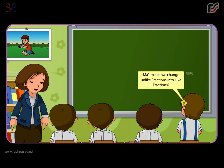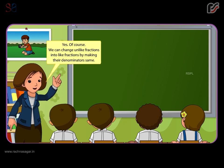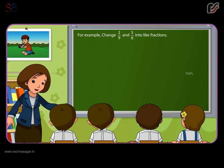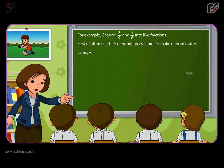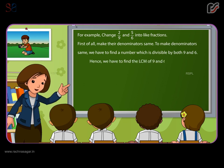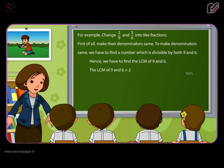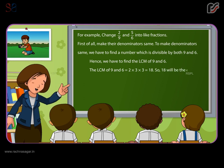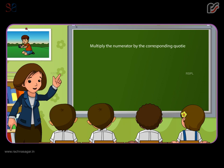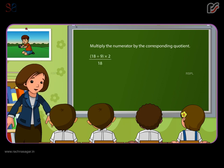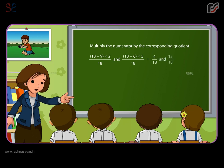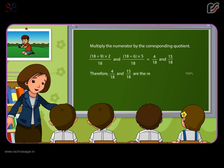Ma'am, can we change unlike fractions into like fractions? Yes, of course. We can change unlike fractions into like fractions by making their denominators the same. For example, change two by nine and five by six into like fractions. First, make their denominators the same. We have to find the LCM of nine and six. The LCM of nine and six is equal to two into three into three, which equals eighteen. So eighteen will be the common denominator. Eighteen divided by nine multiplied by two, divided by eighteen, and eighteen divided by six multiplied by five, divided by eighteen, equals four by eighteen and fifteen by eighteen. Therefore, four by eighteen and fifteen by eighteen are the required like fractions.